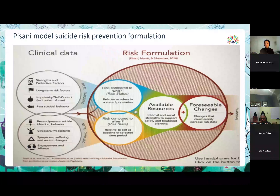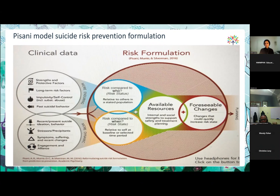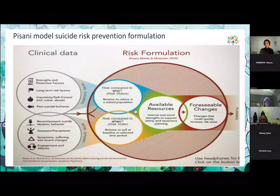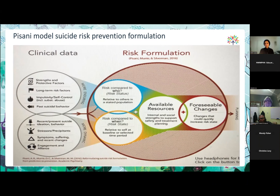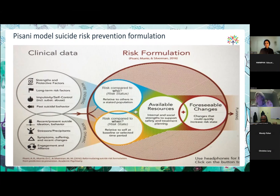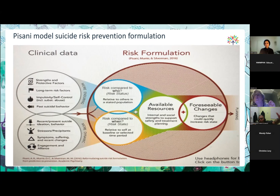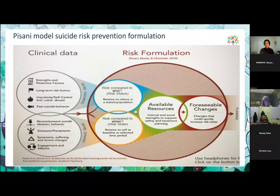With all of that clinical data we write a formulation that has four parts. The first is called risk status — a description of the risk of the individual when compared with others in a stated population. If you are seeing a young person in your clinic, your risk assessment of this person compared with the risk status of the last five or ten adolescents you've seen will give you a gut feeling that this is the most risky young person I've seen, which will then trigger certain decisions in your mind.